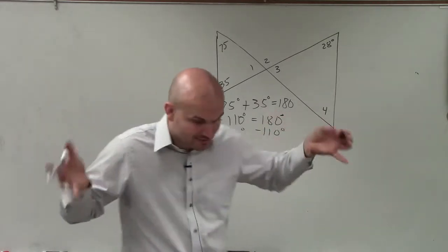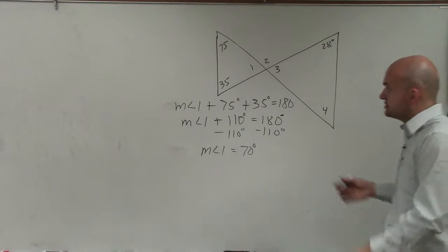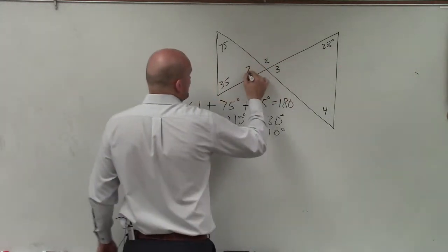Cool, right? I got 70 degrees. Measure of angle 1 is equal to 70 degrees. So now I'm going to replace that with 70 degrees.